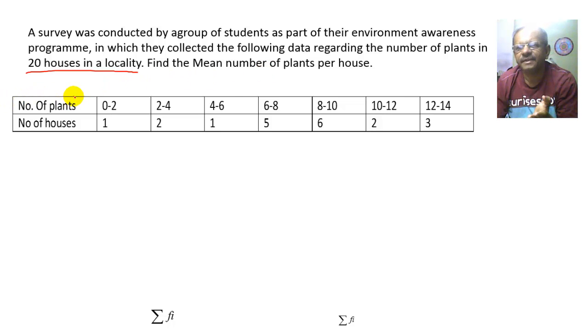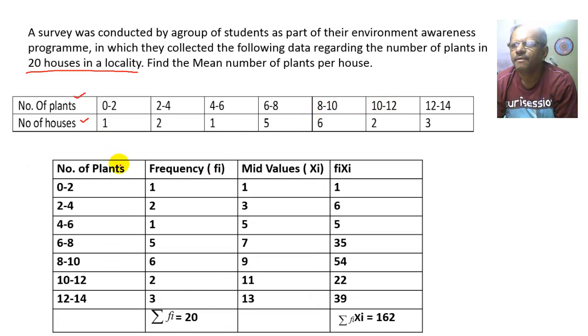So the data is given as number of plants and the number of houses. First we will set up the table. Number of plants given to you, frequency given to you, then we will find the mid values that is Xi. The mid value is the average of these two numbers 0 to 2. So 2 plus 0 will be 2 divided by 2 that equals 1.